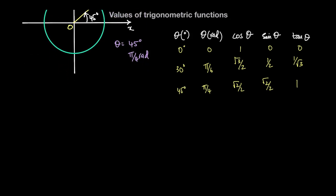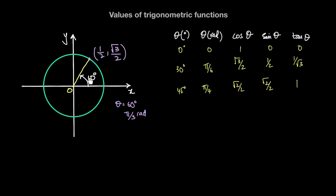When theta equals 60 degrees, or pi over 3 radians, the x-coordinate of the point on the unit circle — that's cosine of theta — is 1 over 2, and the y-coordinate — sine of theta — is square root of 3 over 2. So the cosine of theta is 1 over 2, the sine of theta is square root of 3 over 2, and the ratio sine theta divided by cosine theta gives tan theta equal to square root of 3.